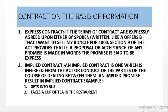Implied contracts are those which could be inferred from the act or conduct of the parties or the course of dealing between them. An implied promise results in an implied contract. Like when we get into a bus, it means we want to travel and we have to buy the ticket. When we go to a restaurant and order a cup of tea, it means we have to pay the price — because implied contracts are inferred from the conduct of the parties.